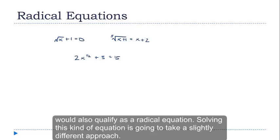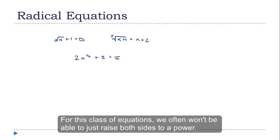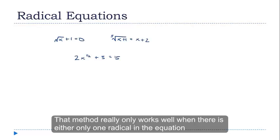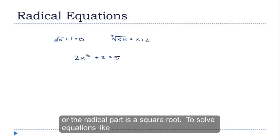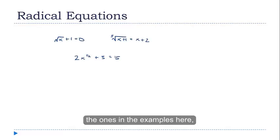Solving this kind of equation is going to take a slightly different approach. For this class of equations, we often won't be able to just raise both sides to a power. That method really only works well when there's either only one radical in the equation or the radical part is a square root. To solve equations like the one in the example here, we're going to need a different method.